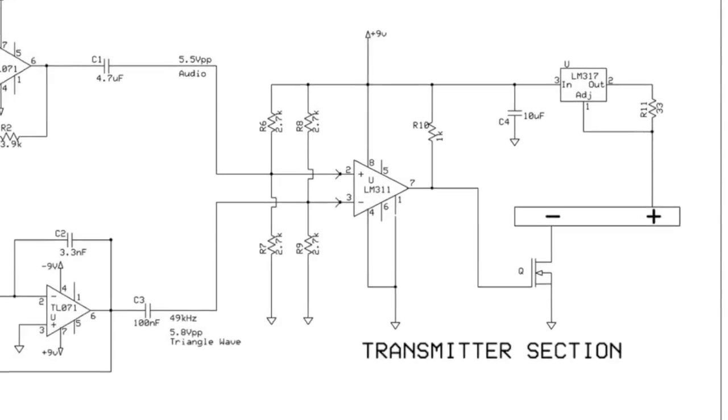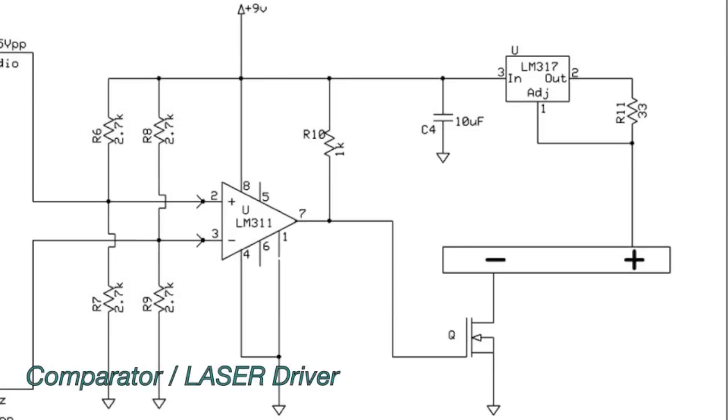So the final module in the transmitter is the comparator and the laser driver, and this circuit is centred around the LM311 comparator, which will be in one of two possible output states, and they are positive rail or ground. So both of the aforementioned signals, the audio waveform and the triangle wave, will be compared on terminals 2 and 3. If the audio waveform has a greater amplitude, then the comparator will go to positive rail. Conversely, if the triangle wave has a higher amplitude, then the comparator will return to Earth.